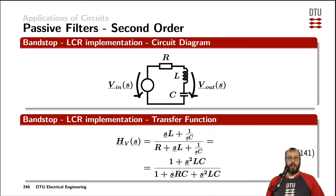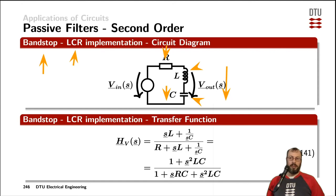Equally to the bandpass, we can implement the band stop as an LCR circuit, where the series connection of the inductor and capacitor produces the output voltage and the resistor sits between the input and output. For low frequencies, all the input voltage is across the capacitor and the inductor is a short. For high frequencies, all the input voltage is across the inductor and the capacitor is a short. In between, it is the resistor that defines the behavior of the circuit.